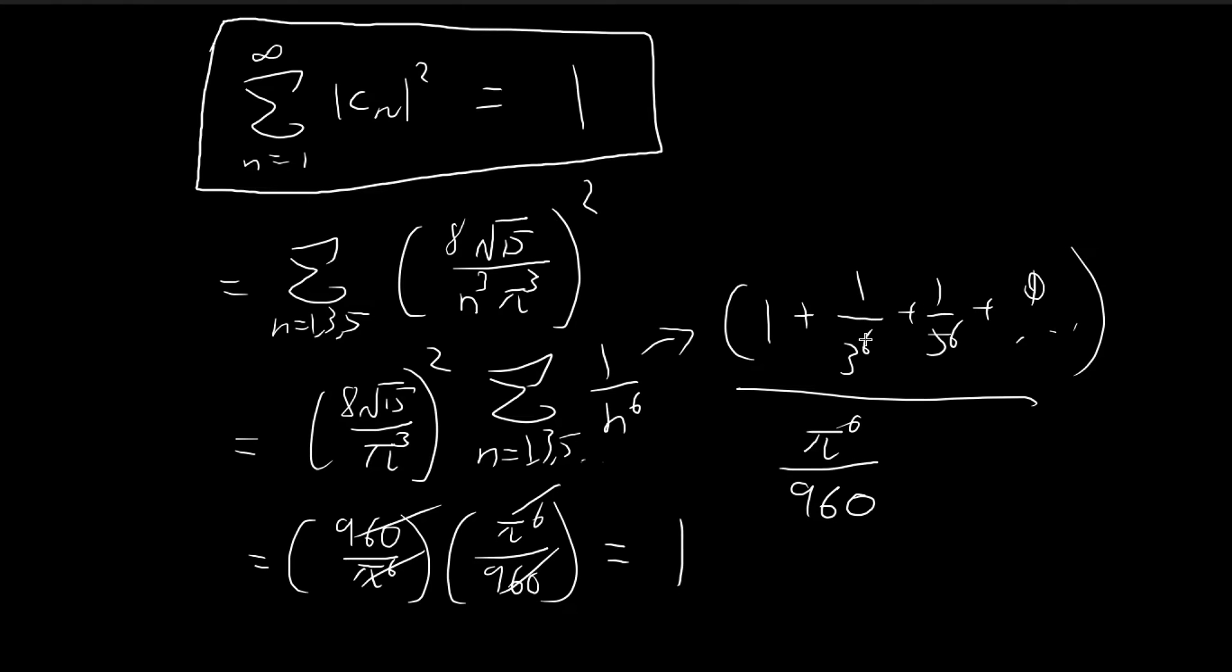This is actually pretty similar to what we had before, only this time it's raised to the power of 4. Once again, the best I can do is give you the answer for this infinite series: π⁴/96. We can substitute this back into this expression. π⁴ cancels out, and 480 divided by 96 equals 5. So you get 5ℏ²/(ma²). This is your answer, the expected value of total energy.